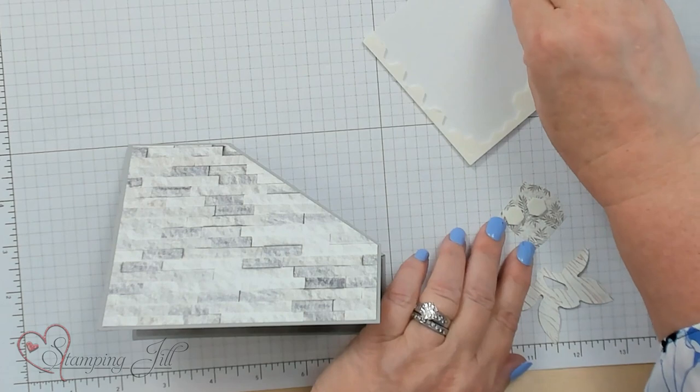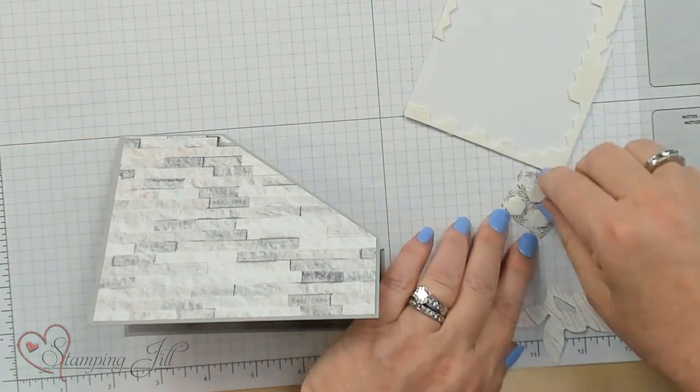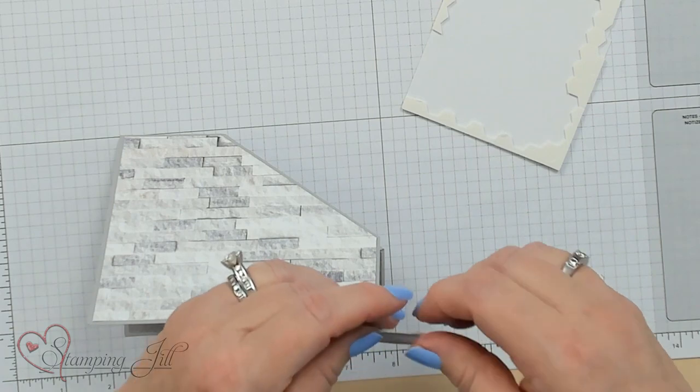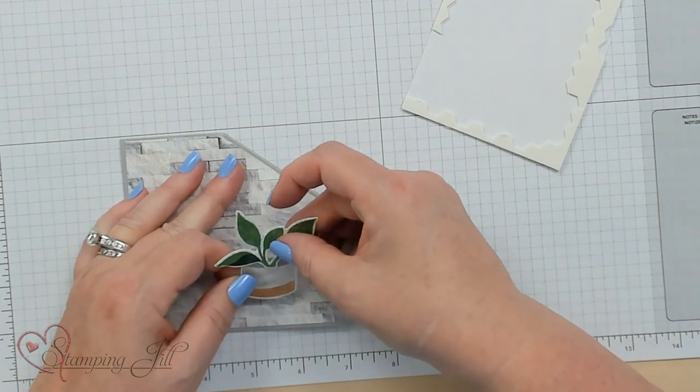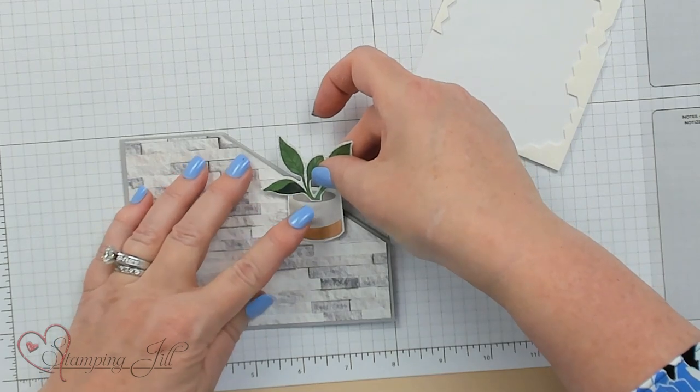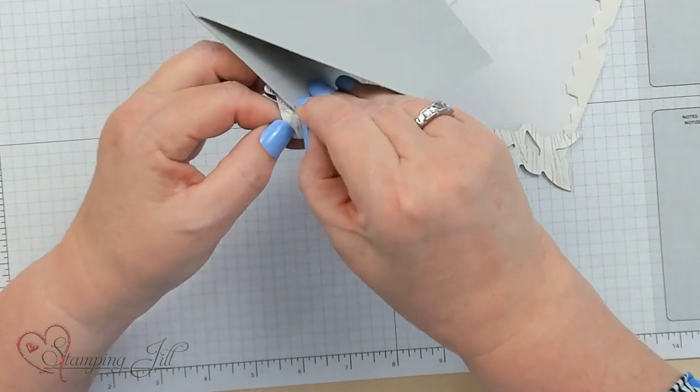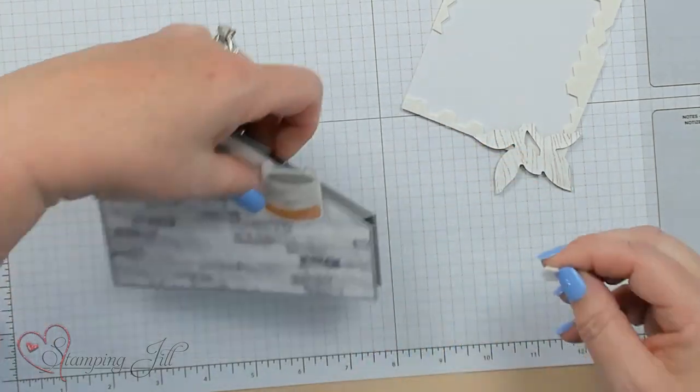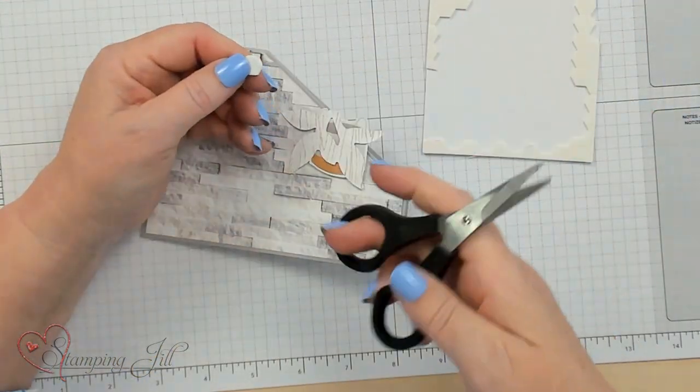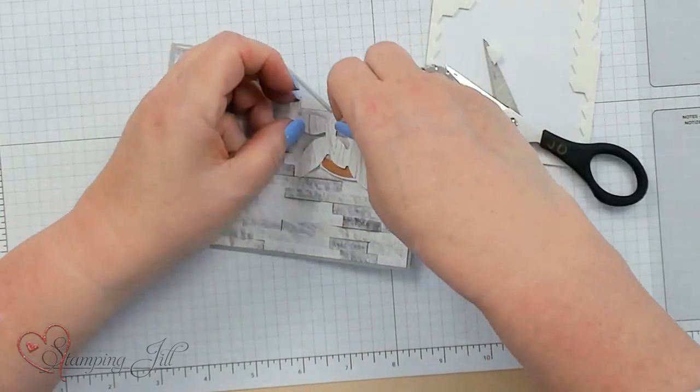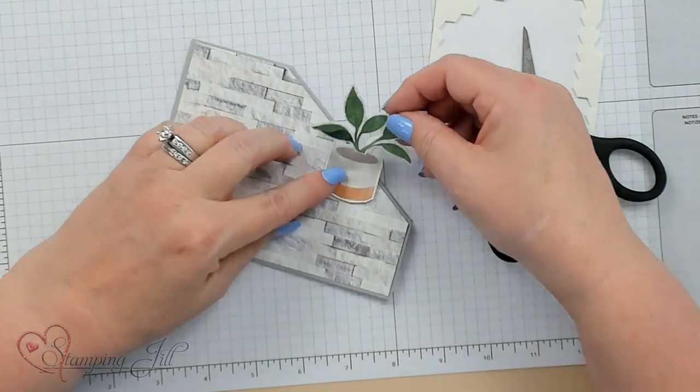I went ahead and cut out some designer series paper that goes with the suite of Plentiful Plants. I thought it was a really good one to use for masculine cards. I'm going to put that like that. I'm going to move that off. Now I'm going to put these up also. I think I will cut this in half just to give it a little bit of height on my plants. Keep it down to the bottom of the plant.